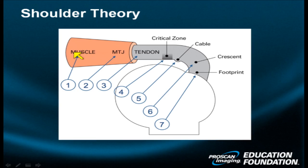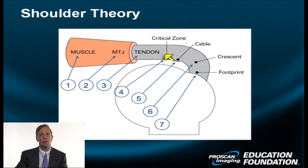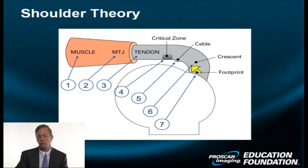Let's start out with a structure we'll call the supraspinatus complex. To the viewer's left, it consists of a muscle. The muscle coalesces into a myotendinous junction, and then it becomes purely tendinous — there is a period where you get a little mixture of both. In the shoulder, in many people, there is an area of less vascularity as the tendon continues more peripherally, known as the critical zone, seen at about one to one and a half centimeters medial to the insertion of the tendon on the head of the humerus.